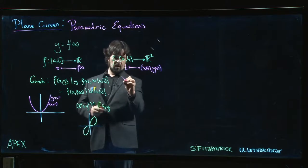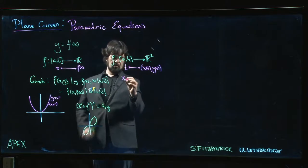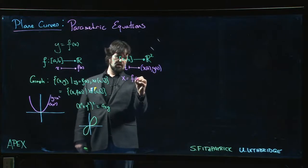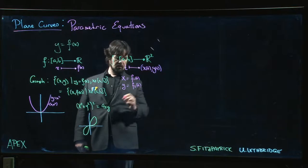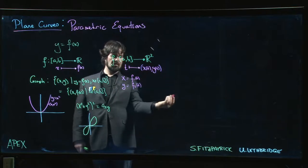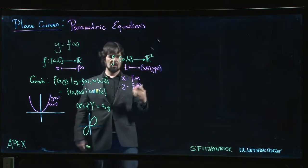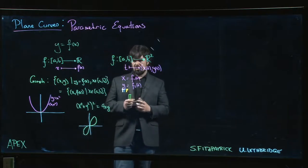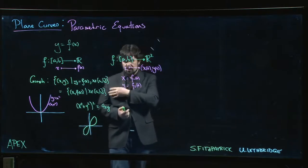Some function of T. So x is some, let's say, f₁ of T, y is some other function, maybe f₂ of T. But we'll often just write it as x of T and y of T. You'll see this notation as well.